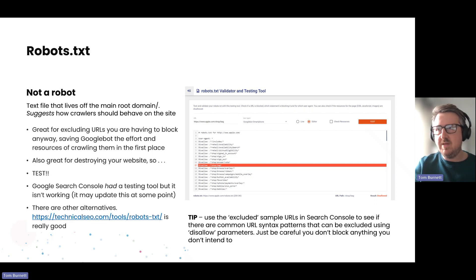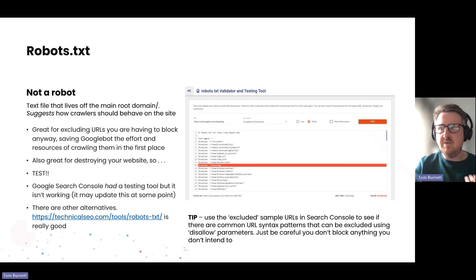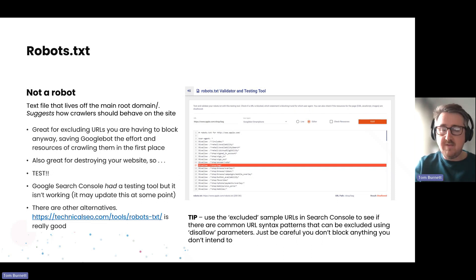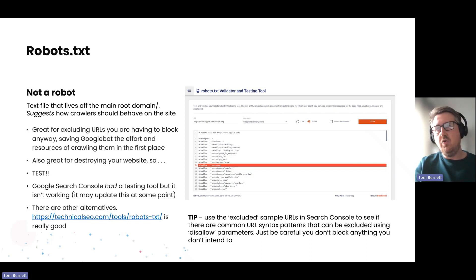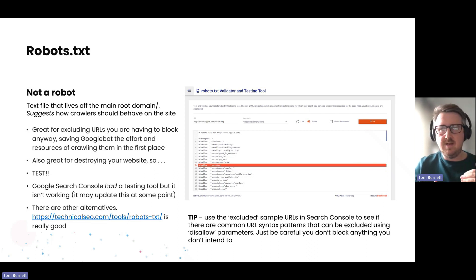There's a really good one on technicalseo.com, and you can use Screaming Frog if you have access to it, in order to troubleshoot problems with robots.txt — highlighting things such as URLs that shouldn't be blocked, or pages that are only found there and not found by crawling the website in general.